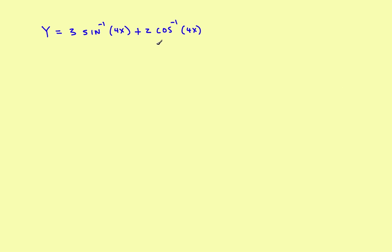The first problem looks like this. You want to find the derivative of y, but in this case it's actually the sum of two things added together — a first thing plus a second thing. So really all you do is find the derivative of the first one plus the derivative of the second one. We'll still use the u substitution approach from the last video. First, let's look at the derivative of three times the inverse sine of 4x.